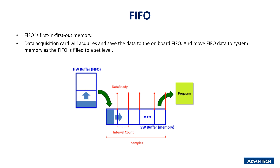The last part is FIFO — First In First Out memory. Because the DAQ card usually has a high sampling rate, it needs the FIFO to save the data and move FIFO data to system memory as the FIFO fills to a set level, as shown in the picture below.